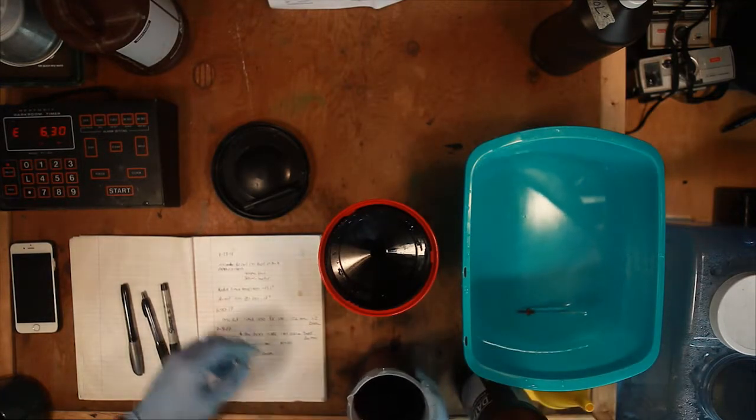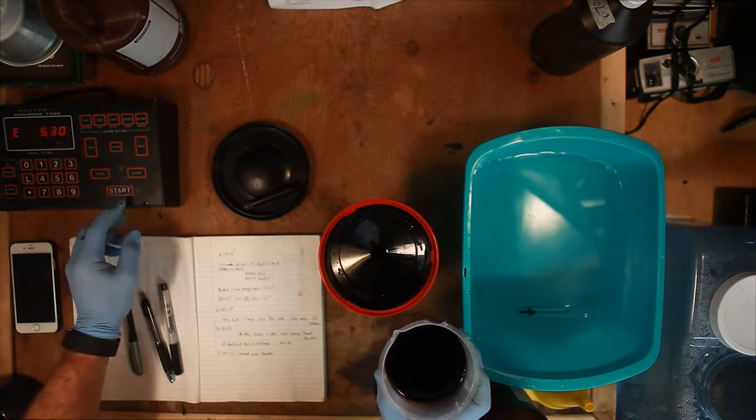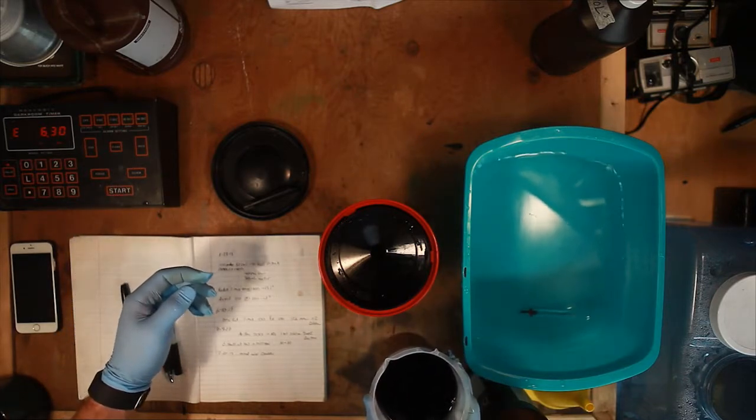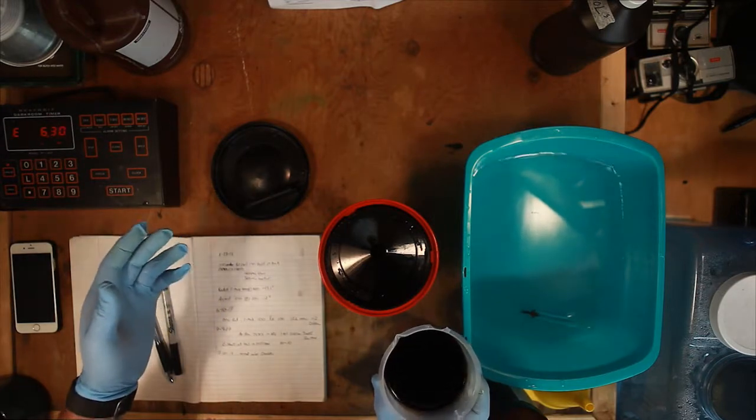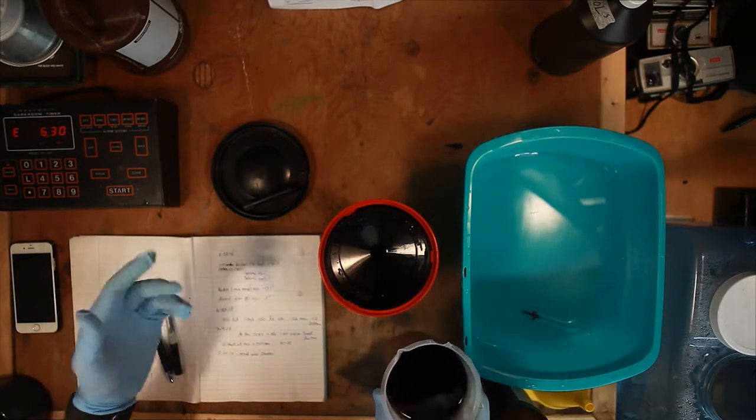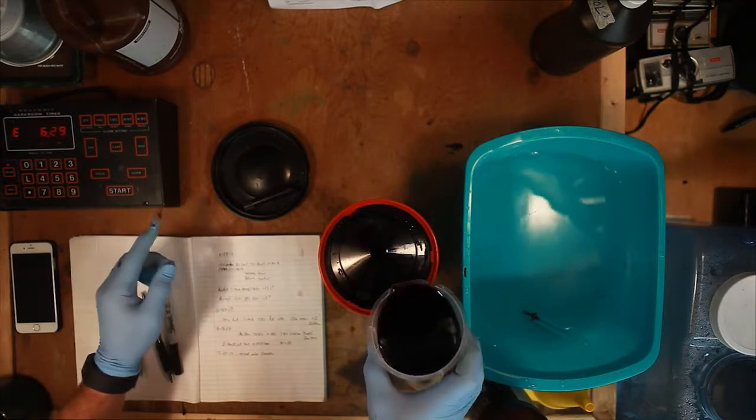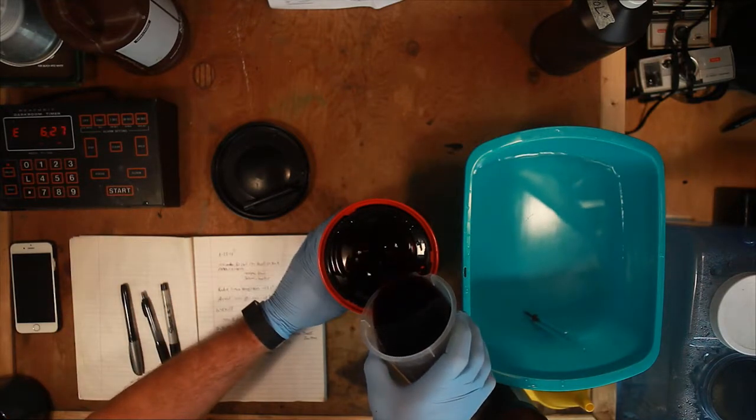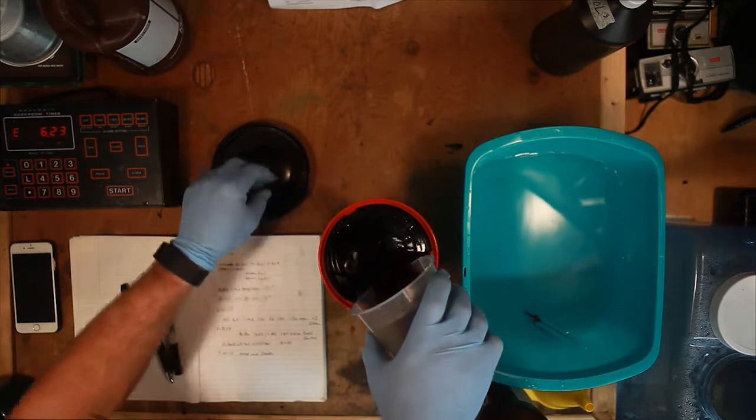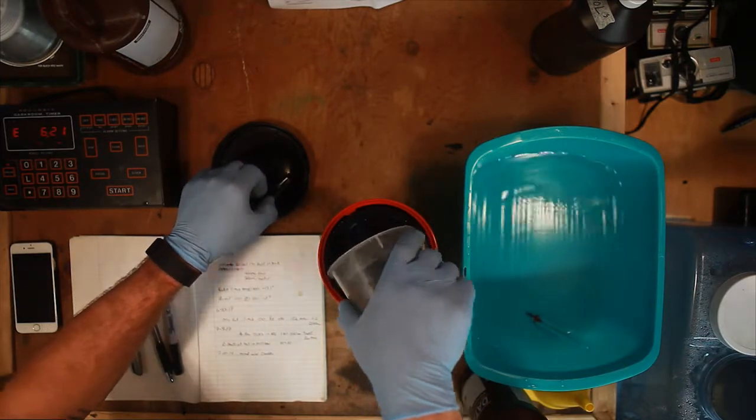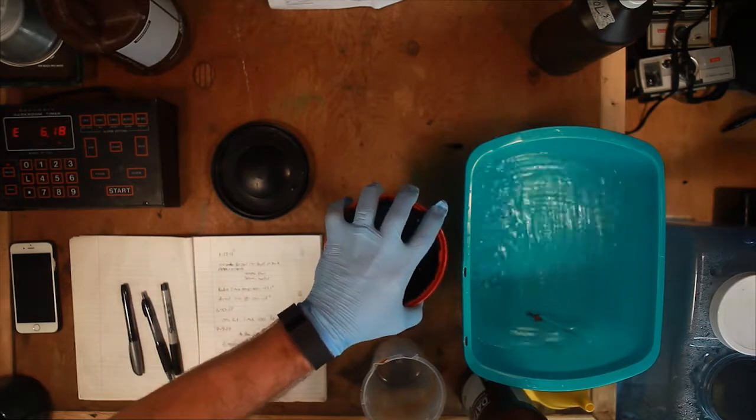Let me get ready to pour this in and hit start and then we'll get that going. Agitation cycle will be the same, just 10 seconds right away and then five seconds every minute. We'll hit the timer and pour that in.